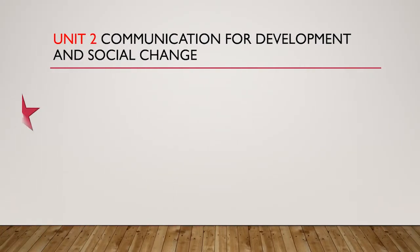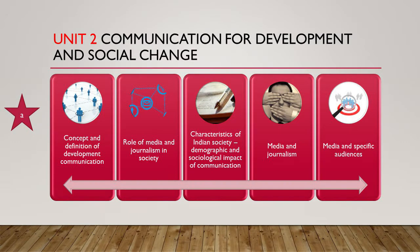Finally, moving to the second unit, which is Communication for Development and Social Change. Here we have to study five parts. Unit 2, Section A consists of five parts: the Concept and Definition of Development Communication — what Development Communication actually is — followed by the Role of Media and Journalism in Society, showing how journalism and media is changing society. Then, Characteristics of Indian Society, including the demographic part and the sociological impact of communication. After that, more about Media and Journalism in relation to Social Change, and finally, Media and Specific Audiences — that means targeting the audiences.